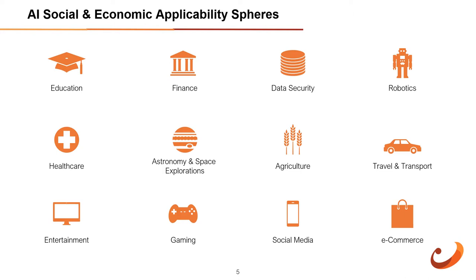In entertainment, we are currently using AI-based applications in our daily life with services such as Netflix or Amazon. With the help of machine learning algorithms, these services show recommendations for programs or shows. AI can also be used for gaming purposes — AI machines can play strategic games like chess where the machine needs to think of a large number of possible moves.